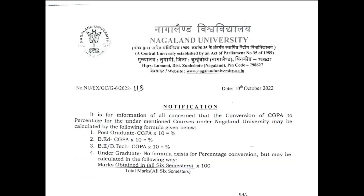Coming back to the postgraduate program — students who have completed their Masters from Nagaland University — they also need to follow the same conversion formula: CGPA × 10 = percentage. For BA candidates, the same conversion formula applies as well.